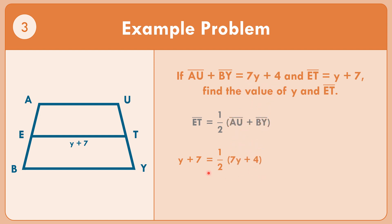Replacing Y plus 7 for segment ET, and then let us multiply both sides by the reciprocal of one-half, which is 2. So 2 times Y equals 2Y, and 2 times 7 equals 14, giving 2Y plus 14. And 2 times one-half equals 1, so we copy 7Y plus 4.